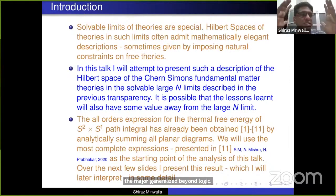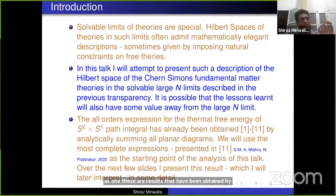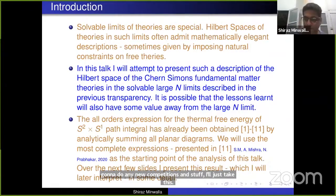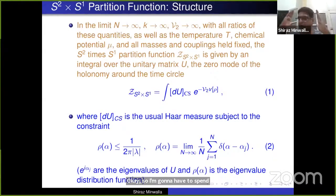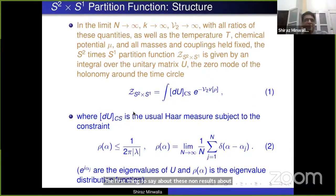What we're going to do in this talk is use known results for partition functions of these large N gauge theories on S²×S¹. These are results obtained by computing the path integral on S²×S¹ by summing all planar graphs, computed over a period of about 10 years. I'm not going to do any new computations — I'll just take the known results and try to interpret them. These partition functions all take the following form: they are given by an integral over a holonomy matrix — a unitary matrix.